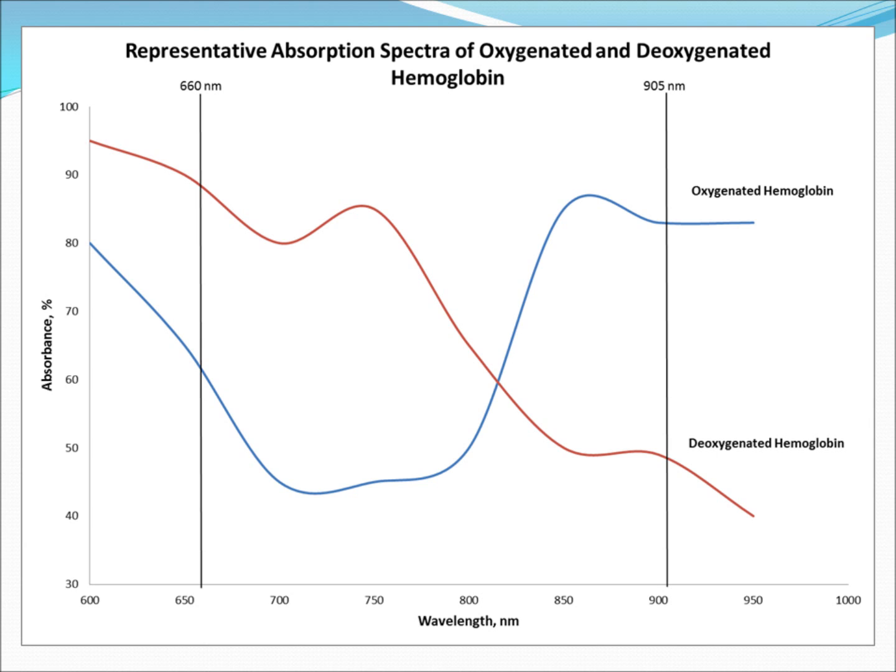Deoxygenated hemoglobin absorbs more strongly at 660 nm than does oxygenated hemoglobin. Conversely, oxygenated hemoglobin absorbs more strongly at 905 nm than does deoxygenated hemoglobin. The ratio of the oxygenated to deoxygenated hemoglobin can be determined from the ratio of the observed absorbances at 905 and 660 nm. From this information, the percent SpO2 can be calculated via an empirically determined calibration algorithm performed by the manufacturer of the instrument.